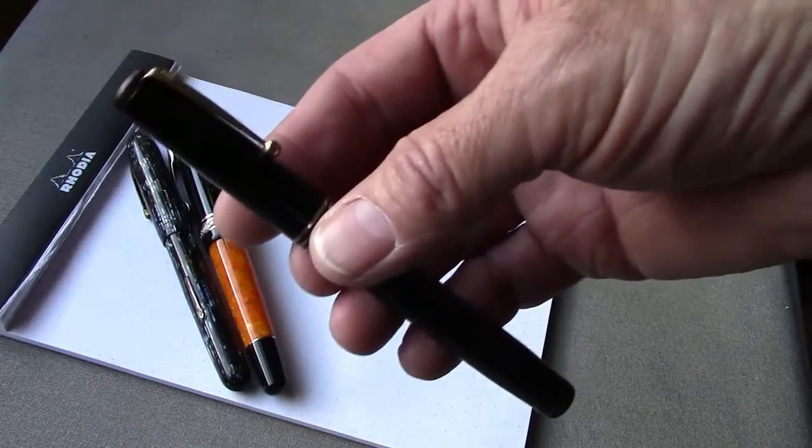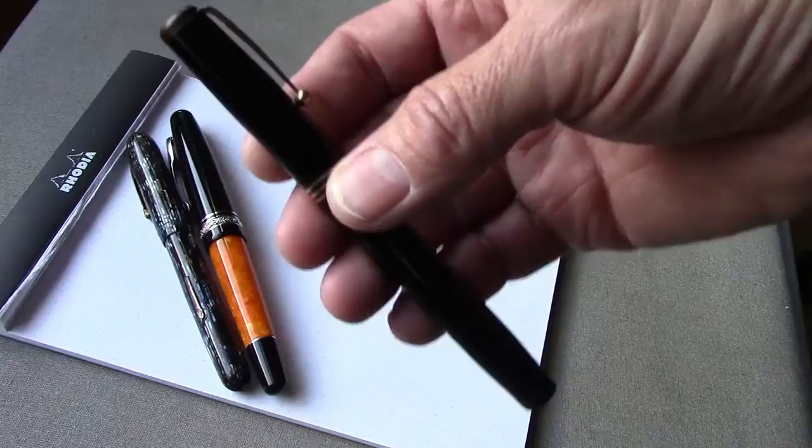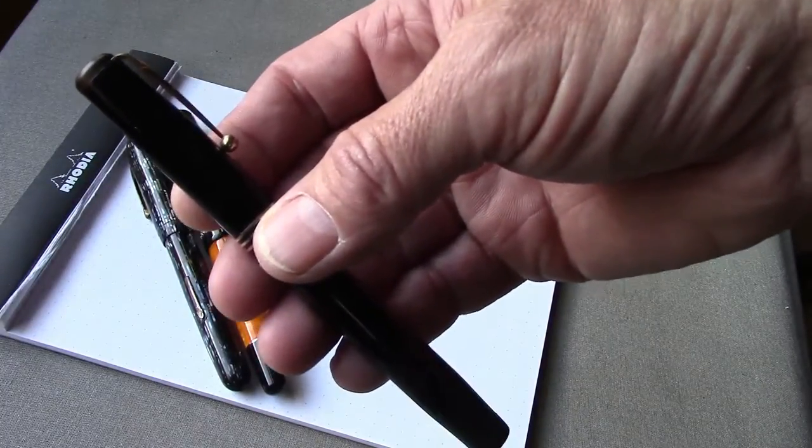I like it because it has somewhat of an oblique stub nib to it. One of the future videos I hope to do is a collection of my pens that have kind of oblique nibs. I have one official oblique nib on my Franklin Christoph 19.